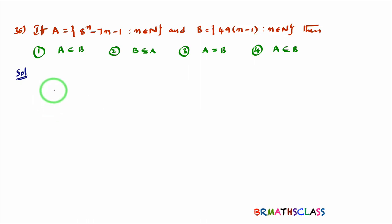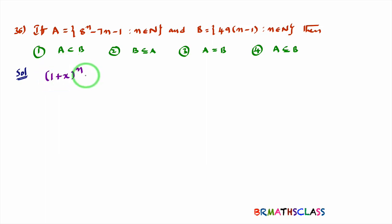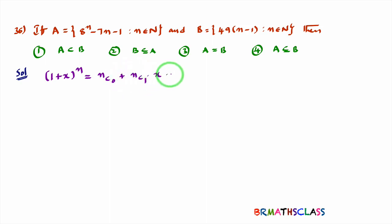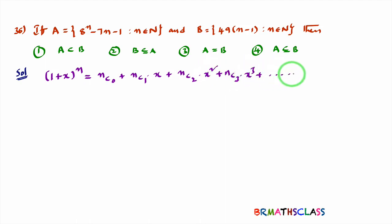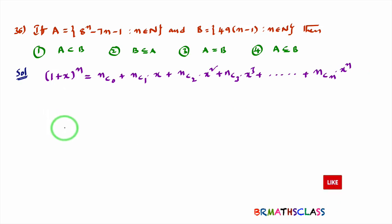This is a little difficult problem on set theory. To understand this problem, you must know binomial theorem. You just need to know this statement from binomial theorem: 1 plus x whole power n equals nc0 plus nc1 into x plus nc2 into x square plus nc3 into x cube plus and so on plus ncn into x power n.